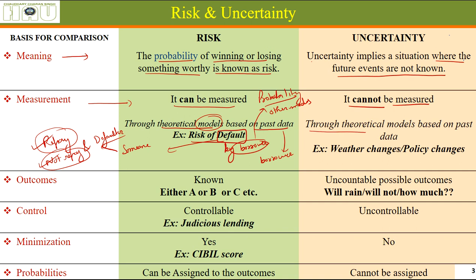Uncertainty can be studied through theoretical models based on past data, but we cannot assign any probability to the outcomes. Weather changes, for instance — we can study them based on past data and satellite observations, but we cannot say with certainty what is going to happen.